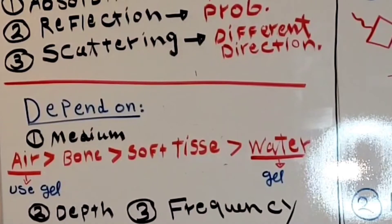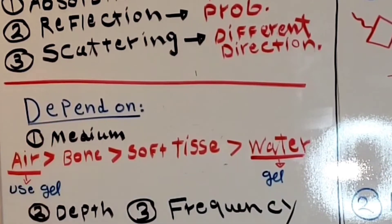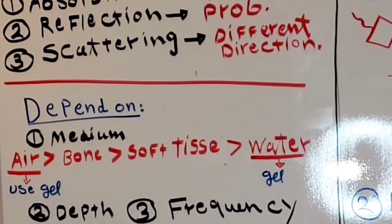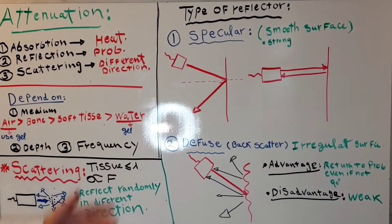The second factor is depth. When the depth increases, attenuation increases. The third factor is frequency. When frequency increases, attenuation increases.